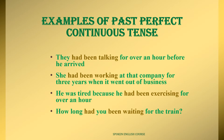In past perfect continuous tense, the first action was ongoing continuously, and the second action is a simple past action that ends it. For example: 'They had been talking for over an hour before he arrived.' The first continuous action is 'had been talking,' and 'he arrived' is the second simple past action. Another example: 'She had been working at that company for three years when it went out of business' — continuously working for three years before the company closed.